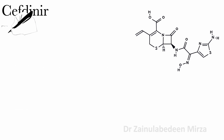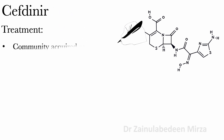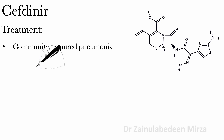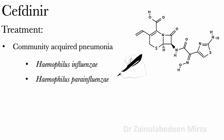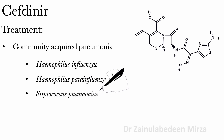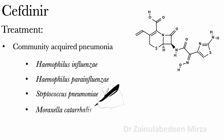Cefdinir is used to treat community-acquired pneumonia, which is a disease caused by Haemophilus influenzae, Haemophilus parainfluenzae, Streptococcus pneumoniae, or Moraxella catarrhalis.